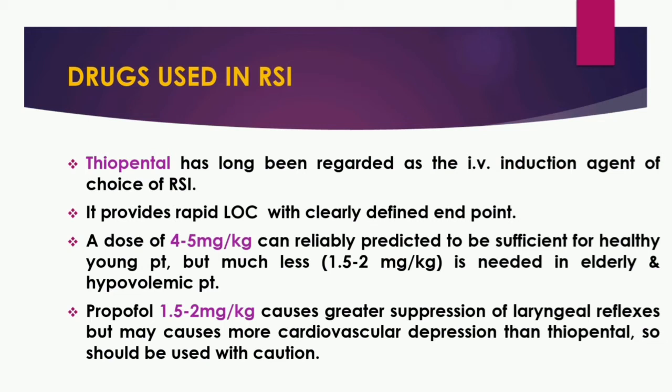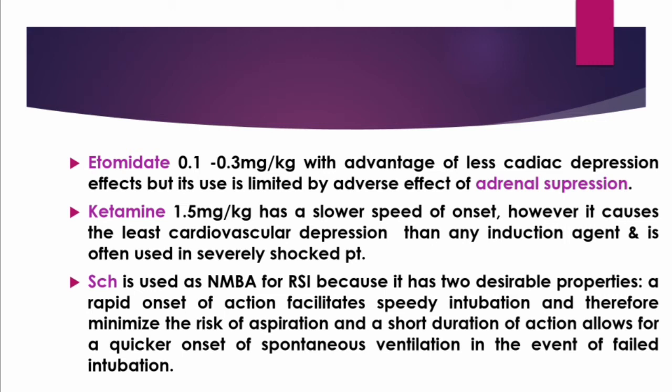Propofol at a dose of 1.5 to 2 mg per kg body weight causes greater suppression of laryngeal reflexes but may cause more cardiovascular depression than thiopental, so it should be used with caution. Etomidate at a dose of 0.1 to 0.3 mg per kg body weight has the advantage of less cardiac depression, but its use is limited by the adverse effect of adrenal suppression. Ketamine at a dose of 1.5 mg per kg body weight has a slower speed of onset; however, it causes the least cardiovascular depression of any induction agent and is often used in severely shocked patients.